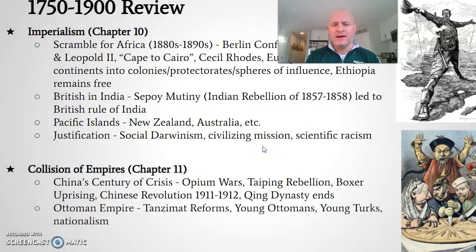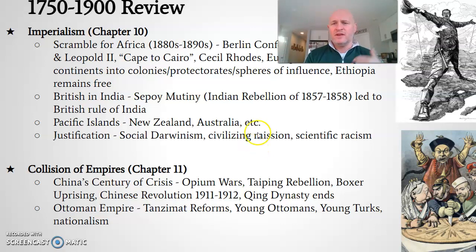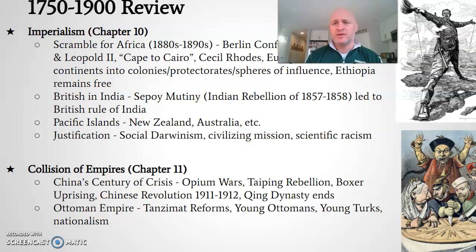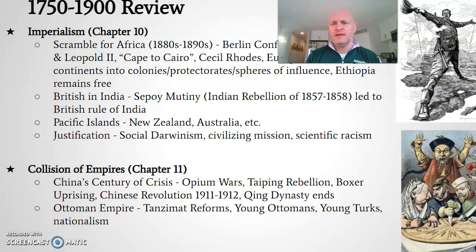The Ottoman Empire: the Tanzimat reforms attempt to bring the Ottoman Empire up to speed with the West. The Young Ottomans are a group that tries to bring the empire into the modern era. Then the Young Turks and nationalism focus on a secular Turkey after World War I, with a modern education system, rapid industrialization, railroads, and factories bringing the Ottoman Turkish Empire up to speed.